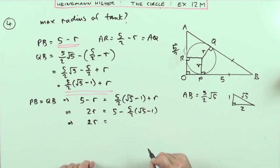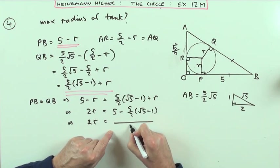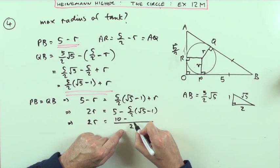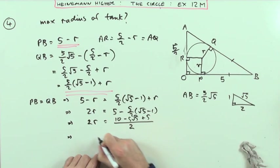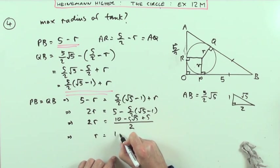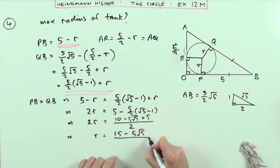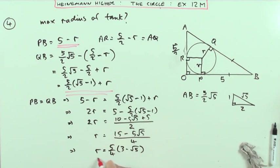That's just a case of tidying this up to get a nice expression for it. I've got 5 into the halves would be 10. Multiply it out at the same time so it'll be minus 5√5 but plus 5. Then r would equal - I could tidy that up - that's going to be (15 - 5√5)/4, or taking out that 5 as a common factor: (5/4)(3 - √5) for the exact answer for the radius.